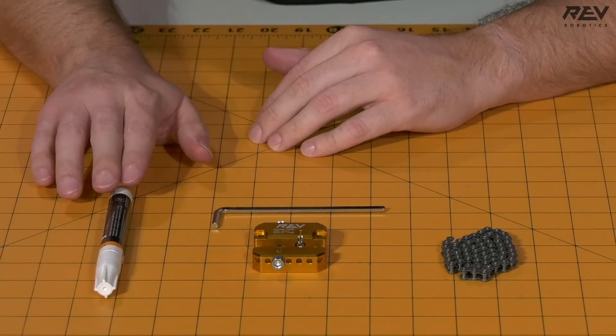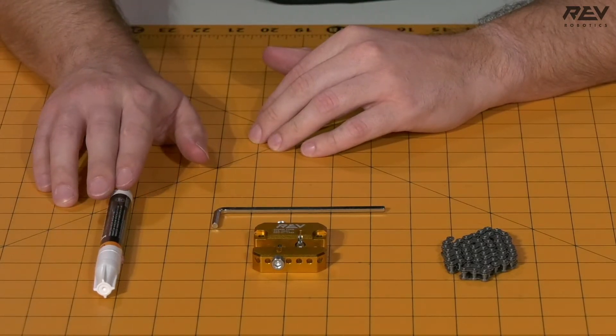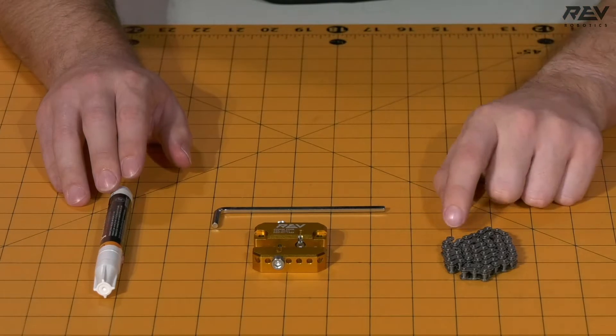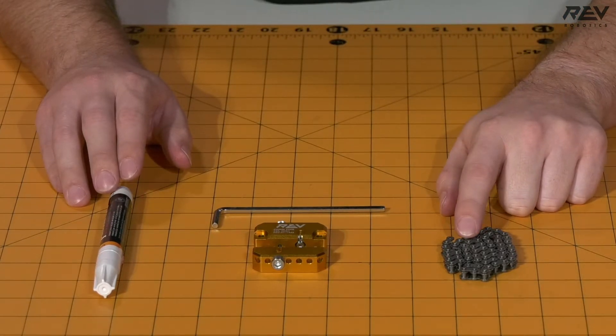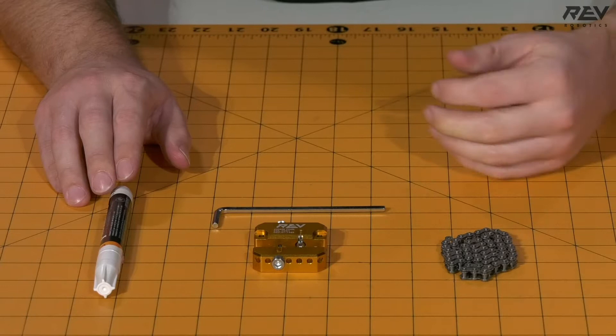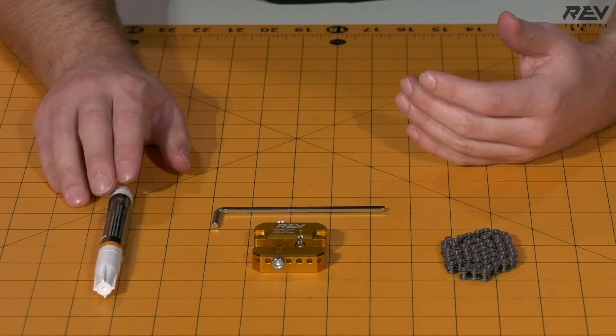we're going to need something longer than 56 links of chain. I also like to have a paint pen or a silver Sharpie or something along those lines to be able to mark the bushing and pin that we need to push through on the chain, just to make it easier for when you're using the chain tool.